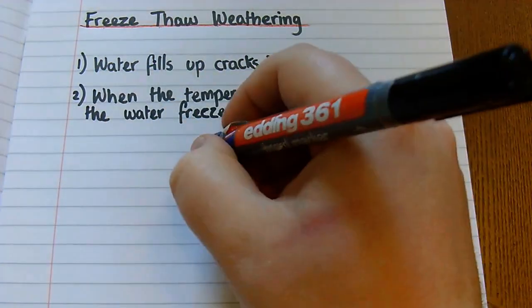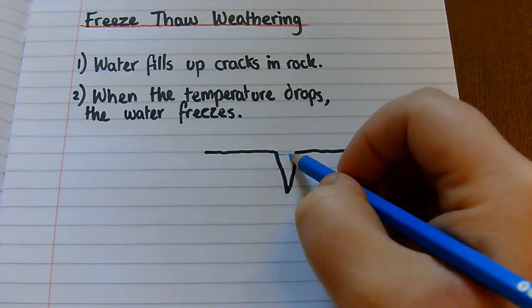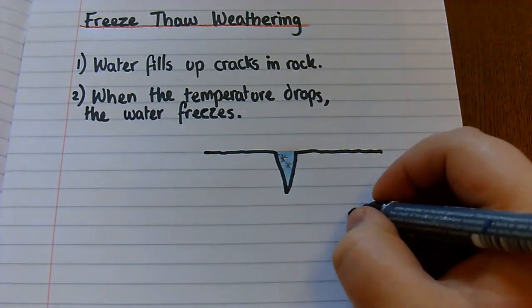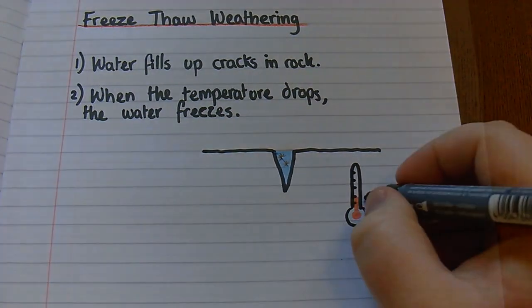First step is for liquid water to flow into cracks in rock below the glacier. The water fills up the cracks. That's the easy bit. But there is no way the liquid water could break the rock on its own.